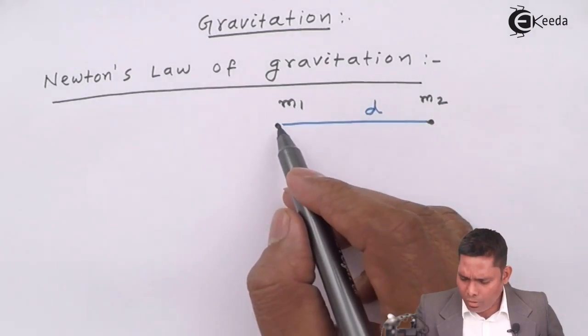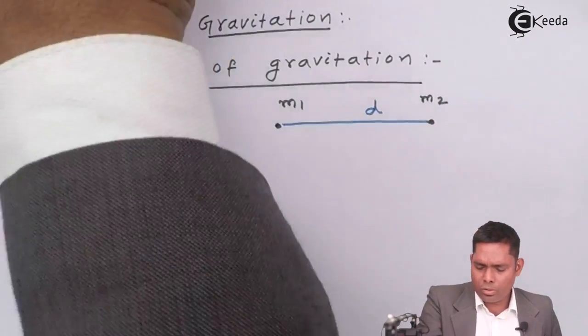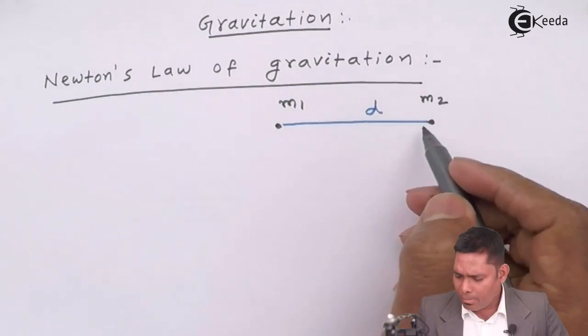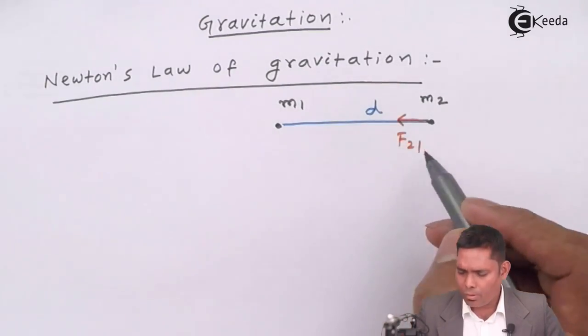Newton says that the first mass, suppose M1, that will exert force on M2 is given by, suppose the force acting on this because of this mass is force on 2 because of 1.